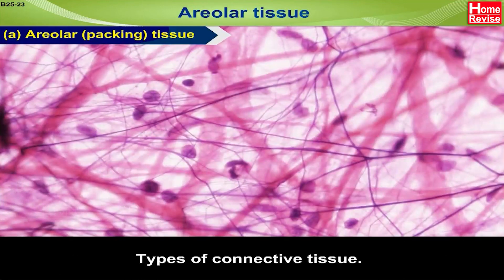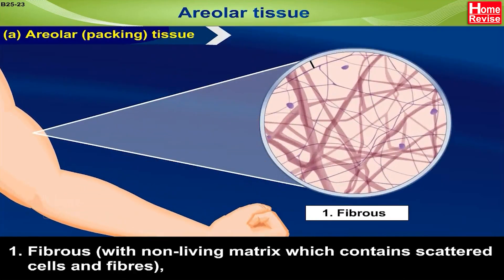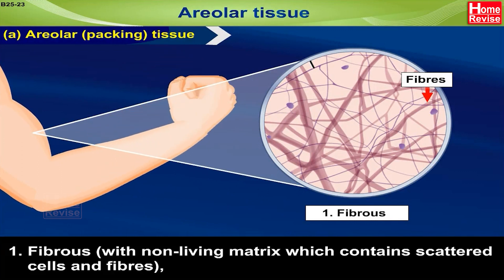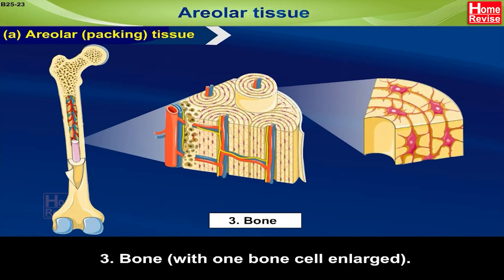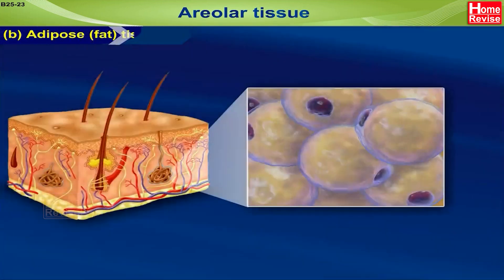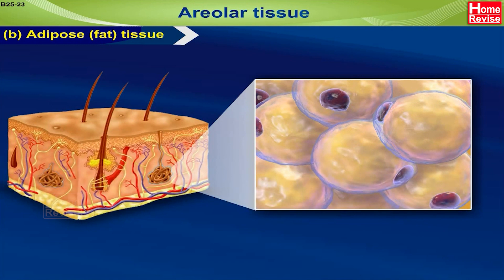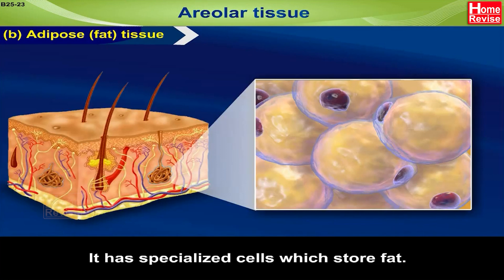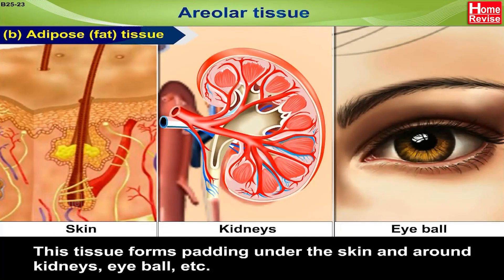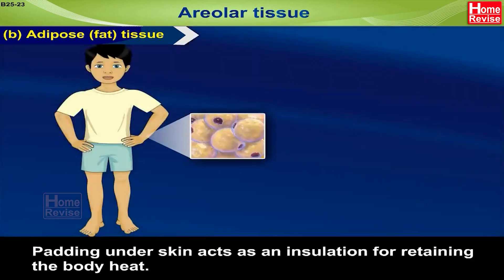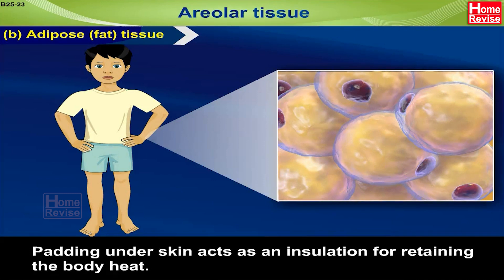Types of connective tissue: one, fibrous — with non-living matrix containing scattered cells and fibres; two, cartilage; and three, bone, with one bone cell enlarged. B. Adipose, that is fat tissue: it has specialized cells which store fat. This tissue forms padding under the skin and around kidneys, eyeballs, etc. Padding under the skin acts as an insulation for retaining body heat.